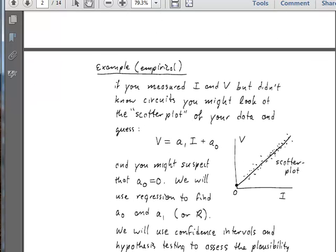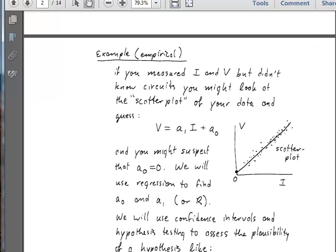In other situations, you may not know that there's a relationship between voltage and current, but you may just suspect it from your data. You may not know Kirchhoff's law here. In that case, you might guess that the relationship is linear just by looking at the data and say that voltage is going to be some constant times the current plus some intercept that could, in principle, be non-zero, but you might look at the data and suspect that it is zero.